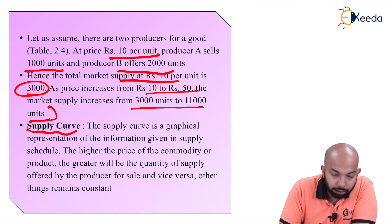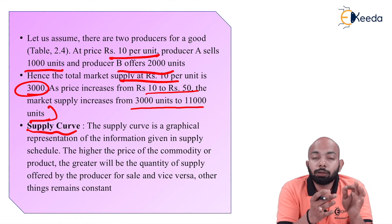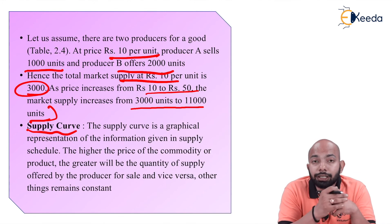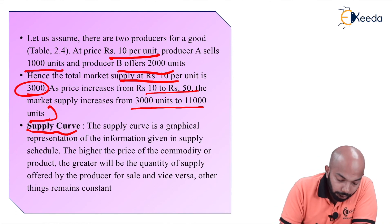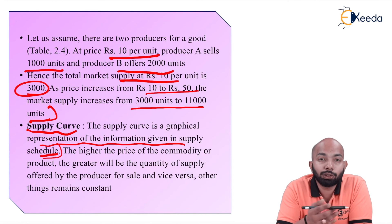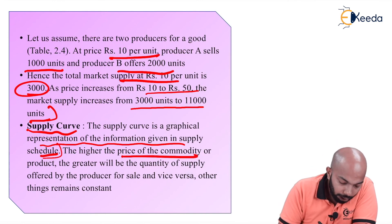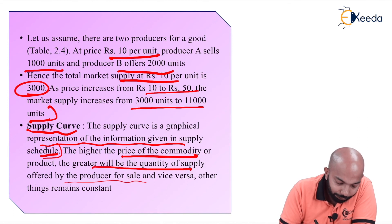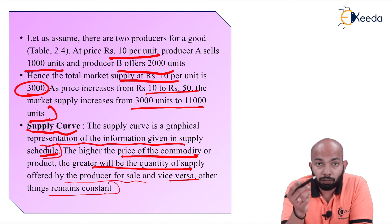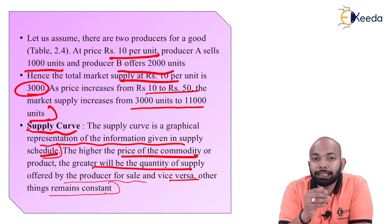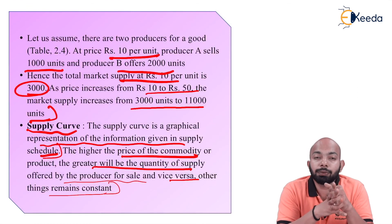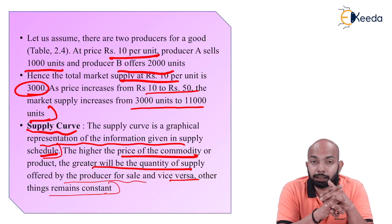The last part is the supply curve. A supply curve is a graphical representation of the information given in a supply schedule. Whatever supply schedule you have, if you plot it in graphical form, that is known as a supply curve. The higher the price of the commodity, the greater will be the quantity supplied by the producer for sale, with other things remaining constant. These are the three alternative ways — supply function, supply schedule, and supply curve — to express the concept of supply. Thank you.